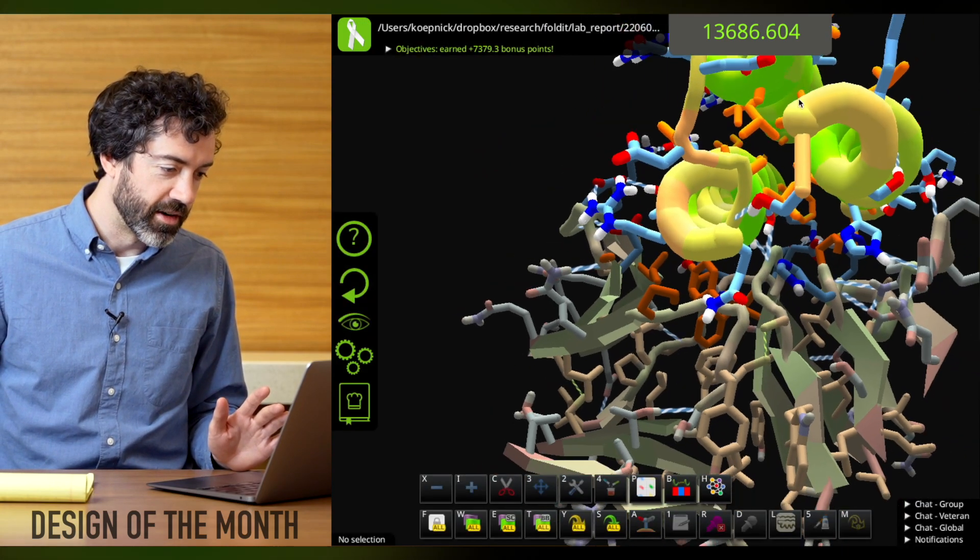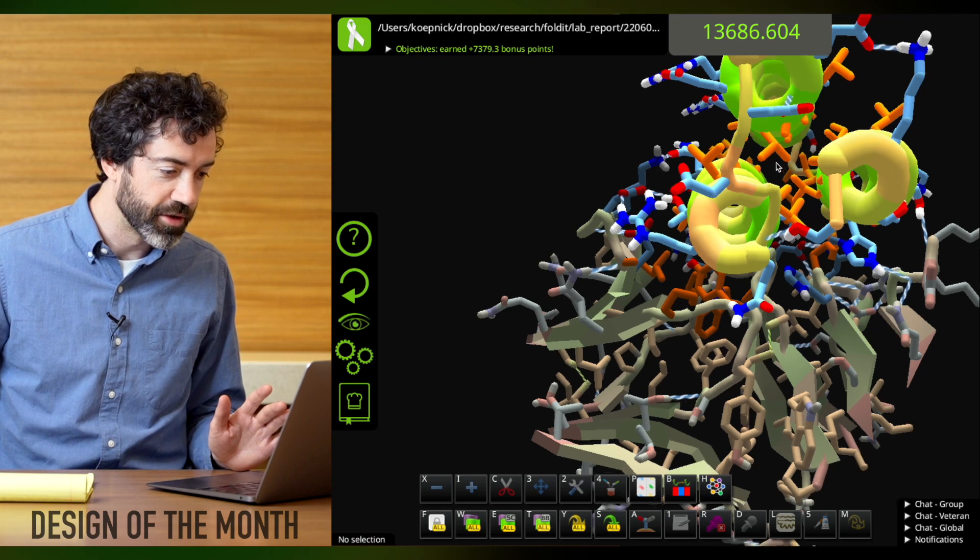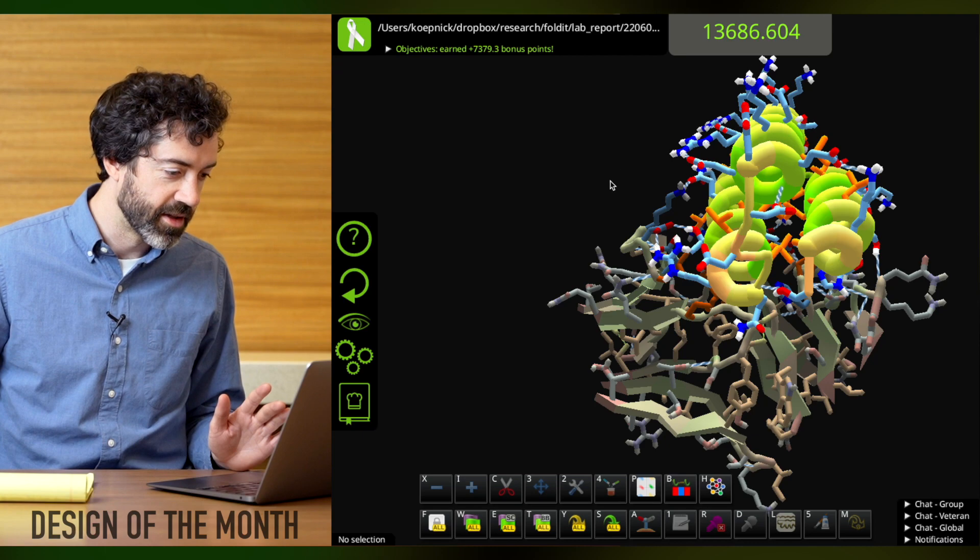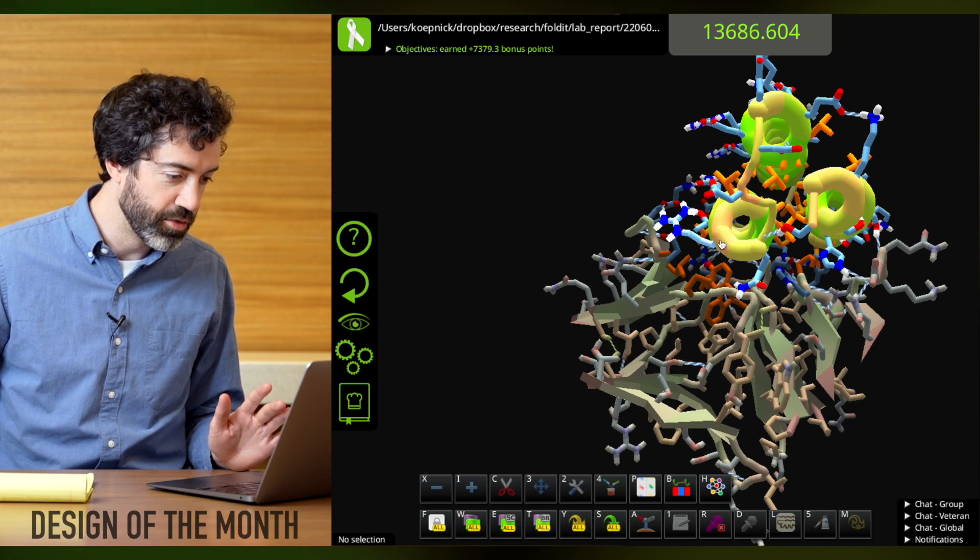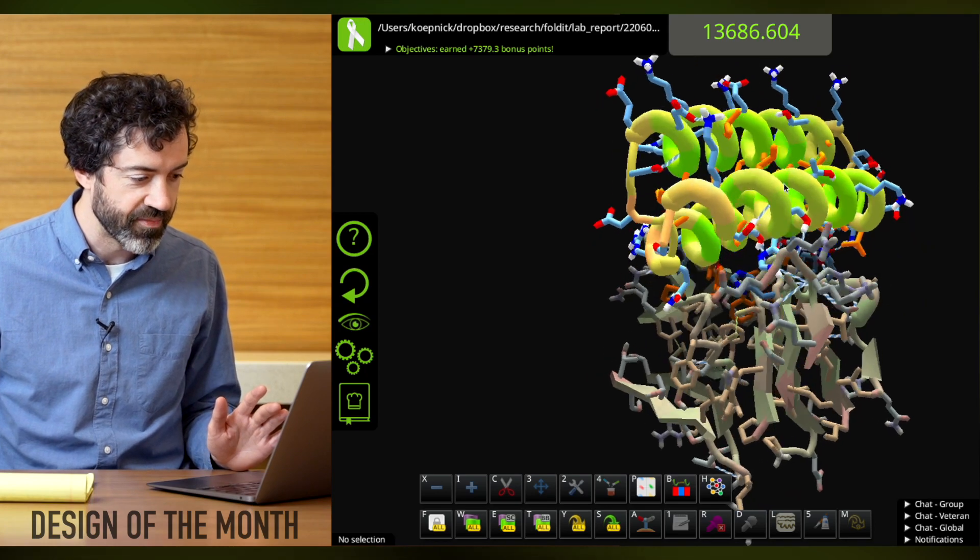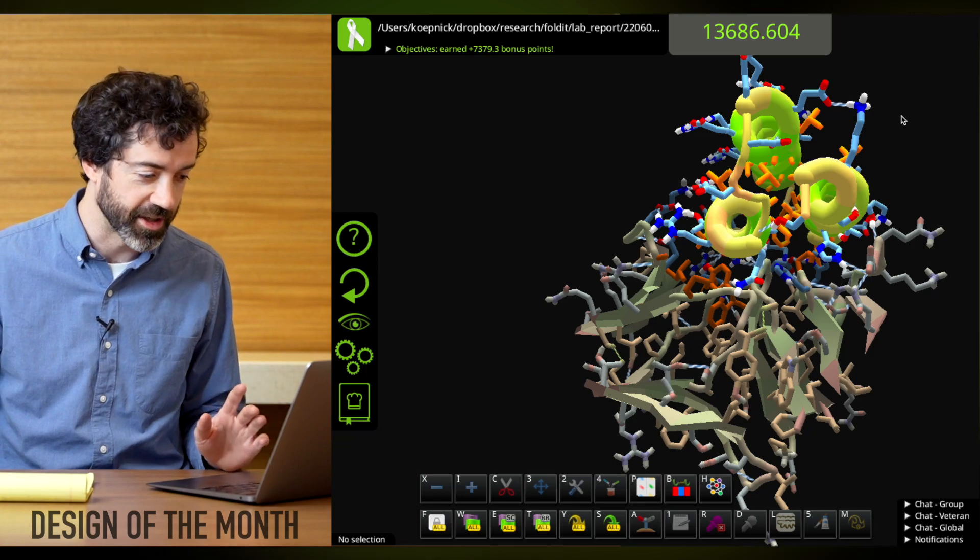So we see right off the bat, we have a strong core full of orange hydrophobic sidechains. And the outside of our binder is sprinkled with blue hydrophilic and polar sidechains. And that's good. That should help this protein fold up correctly and remain soluble so that it can reach the target.